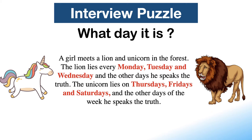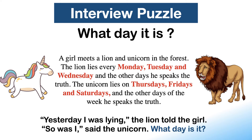The lion lies every Monday, Tuesday and Wednesday, and the other days he speaks the truth. The unicorn lies on Thursdays, Fridays and Saturdays, and the other days of the week he speaks the truth. The lion told the girl: 'Yesterday I was lying.' The unicorn said: 'So was I.' What day is it?